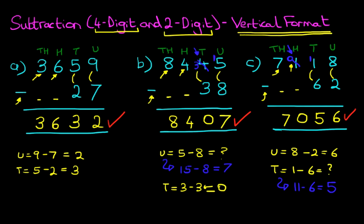So just follow the principles, and you'll get it right every time. So that is subtraction of a 4-digit number and a 2-digit number using the vertical format.